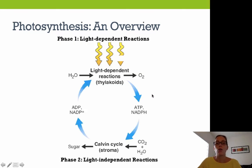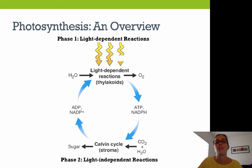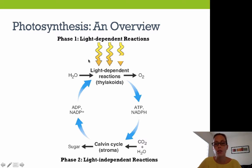Photosynthesis is broken down into two different phases. The first phase is the light-dependent reactions — called light-dependent because they depend on light. In the light-dependent reactions, water plus light energy plus ADP are used. This takes place in the thylakoids and produces oxygen, ATP, and NADPH.